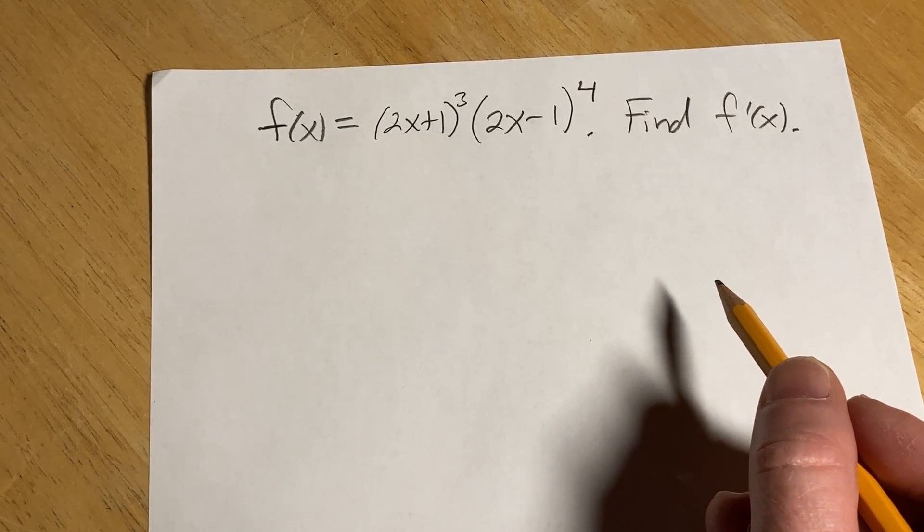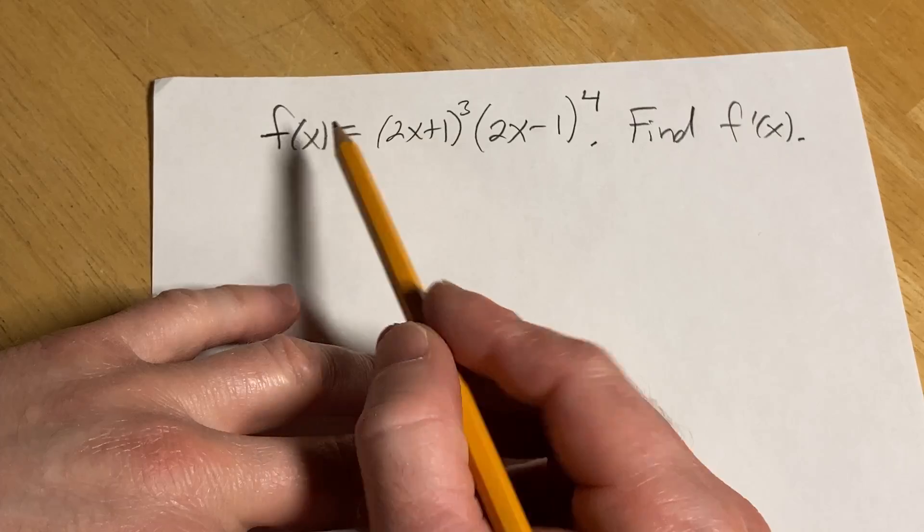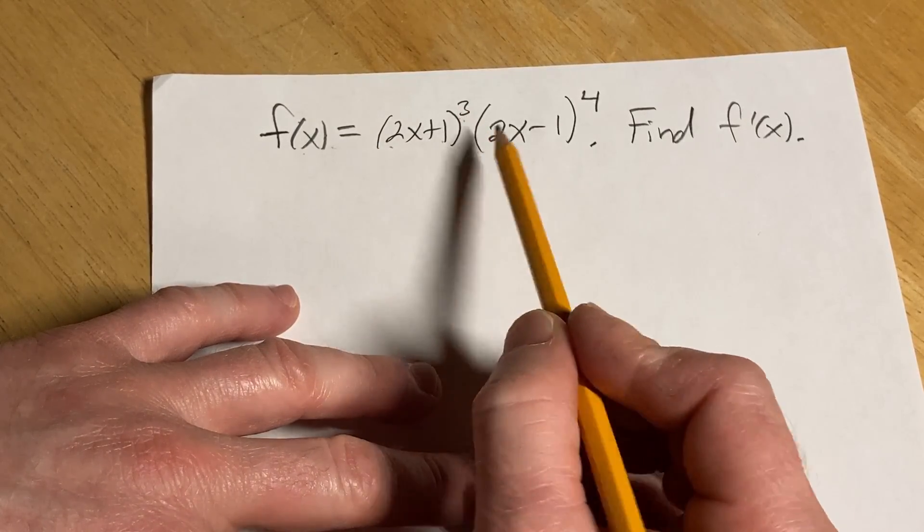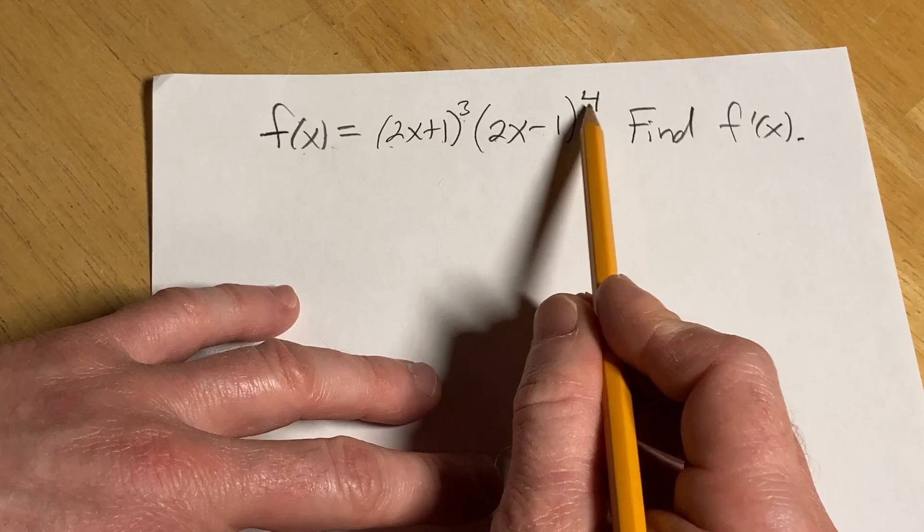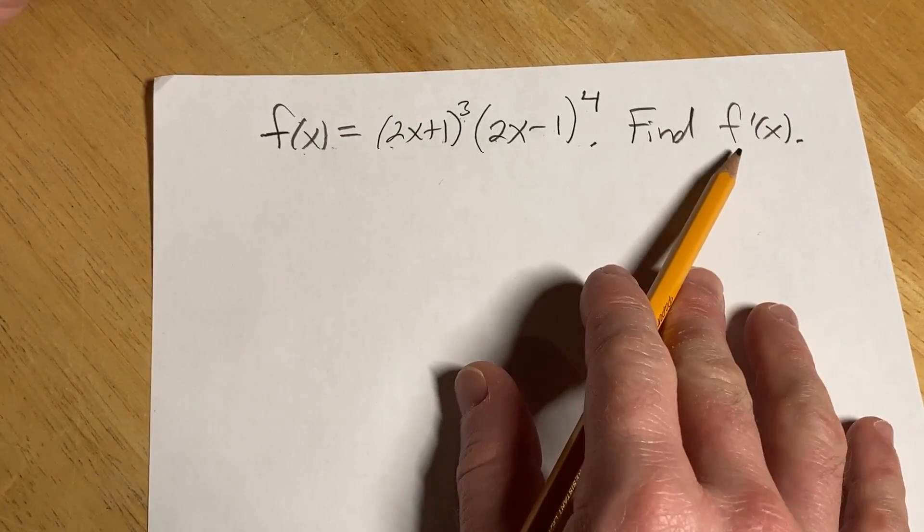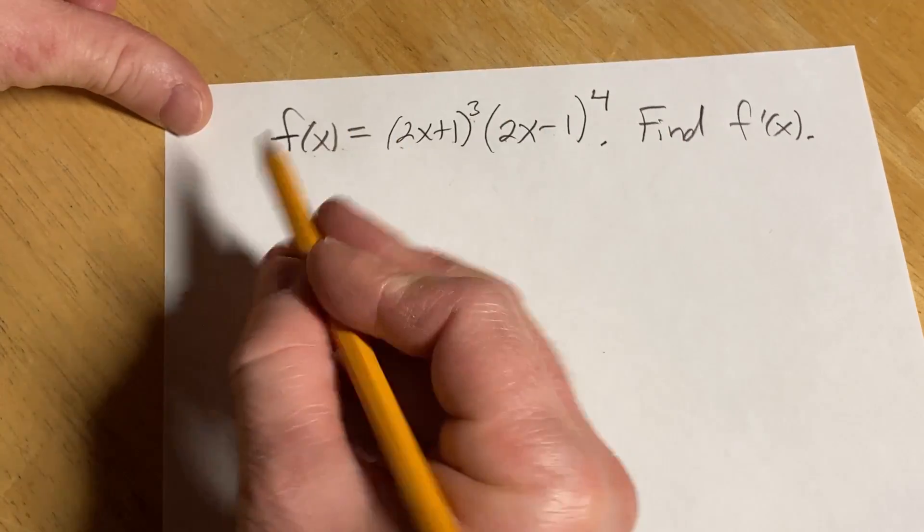Hi, in this video we're going to do some calculus. We're going to find a derivative using the product rule. We have f of x equals 2x plus 1, and that whole thing is cubed, times 2x minus 1, and that whole thing is raised to the fourth power. And the question is to find f prime of x, which is the derivative of f. Let's go ahead and work through it, solution.